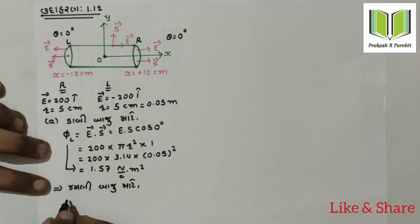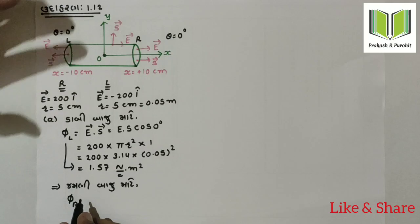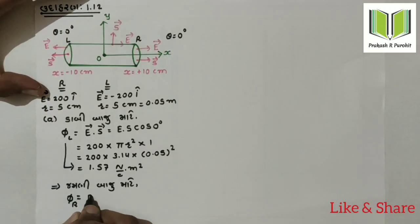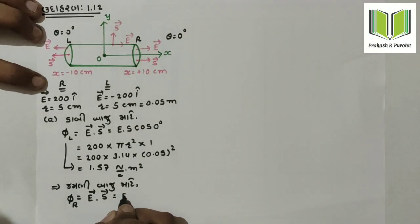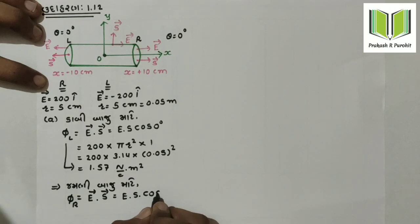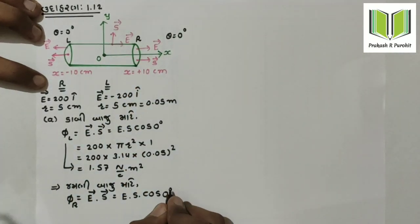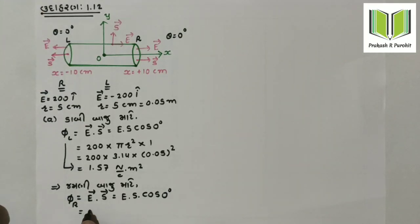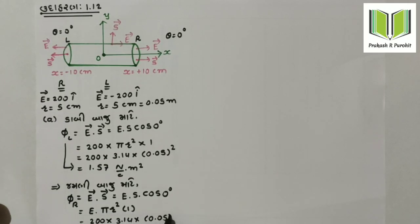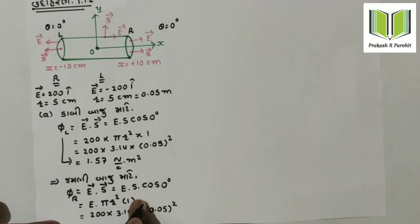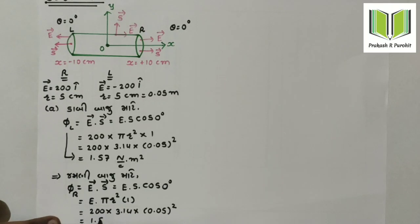Similarly, for the right side, Flux R equals E into S. The calculation is the same: E times pi r squared. With r equal to 0.05 m, we get 1.57 Ω·m² as well.